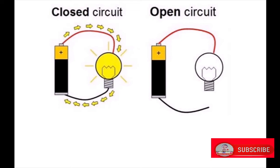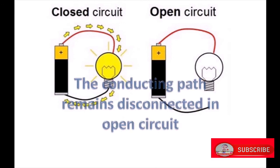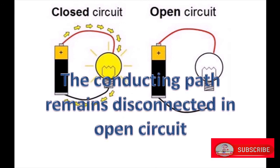Closed circuit and open circuit can be shown as there is disconnection or breaking of pathway through which electric current flows is called open circuit. The conducting path remains disconnected, that is open circuit.